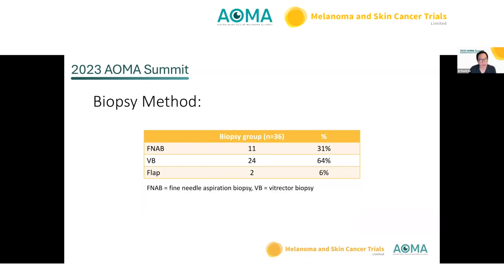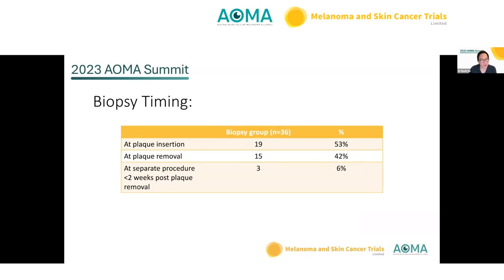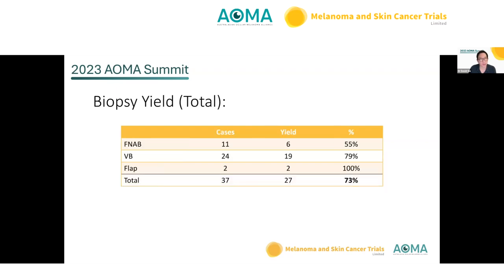The vast majority of biopsies used the vitrector at 64%, a third used fine needle aspiration, and only two cases used the flat method. Initially, 53% of biopsies were done at plaque insertion, but later the approach moved towards biopsy at plaque removal or as a separate procedure within two weeks of plaque removal, mainly due to logistic reasons. For fine needle aspiration biopsy, a yield was obtained in 55% of cases; for vitrector biopsy, 79%; and flat biopsy 100% — 2 out of 2 — due to the much bigger sample.